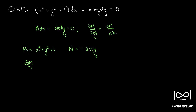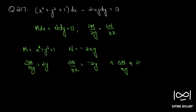So ∂M/∂y is 2y and ∂N/∂x is −2y. As you can see, ∂M/∂y is not equal to ∂N/∂x. Therefore, the given differential equation is not exact.